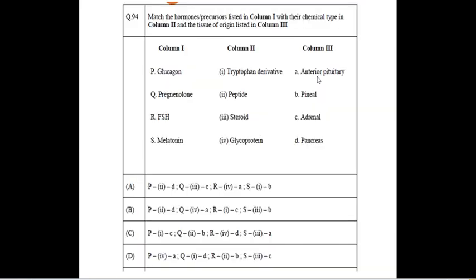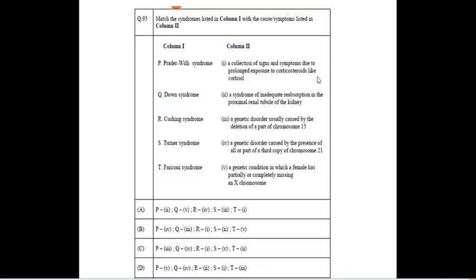Regarding the hormone that is listed in column one and the chemical type listed in column two and the tissue of origin: Glucagon is a peptide hormone which is produced from pancreas. Progesterone is a steroid hormone which is produced by adrenal gland. FSH follicle stimulating hormone is a glycoprotein which is produced by anterior pituitary. And melatonin is a tryptophan derivative which is produced by the pineal gland.